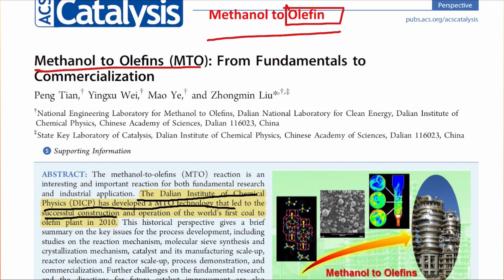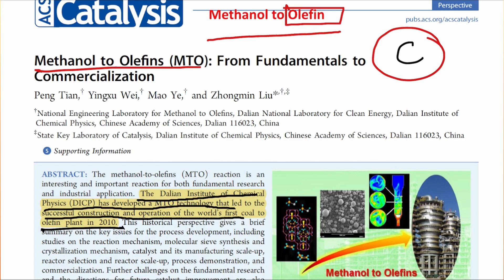The Dalian Institute of Chemical Physics has developed methanol-to-olefin technology that led to the successful construction and operation of the world's first coal-to-olefin plant. Coal contains carbon and can be converted into methanol. This is very important for India, which is deficient in petroleum but has huge coal reserves. Countries without coal or petroleum can also utilize this technology.